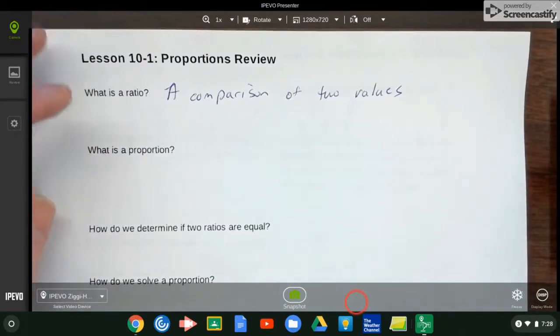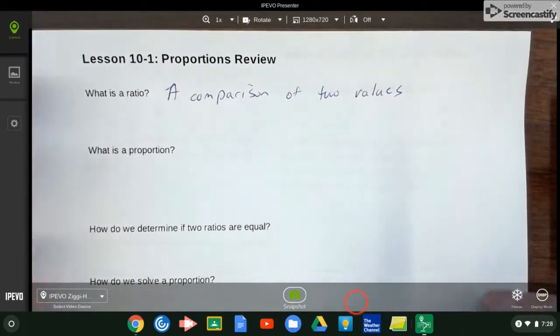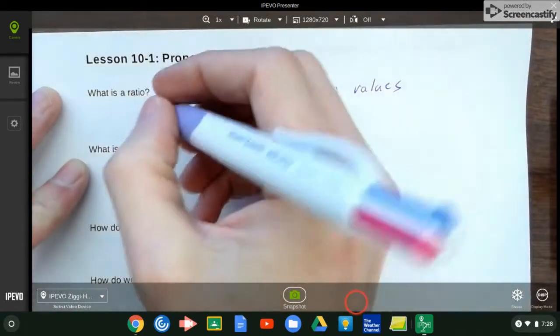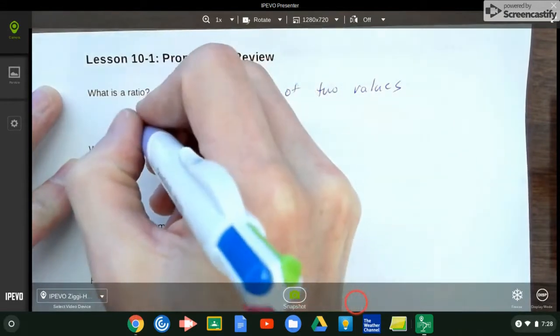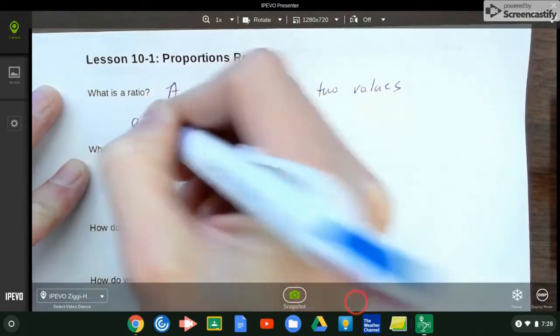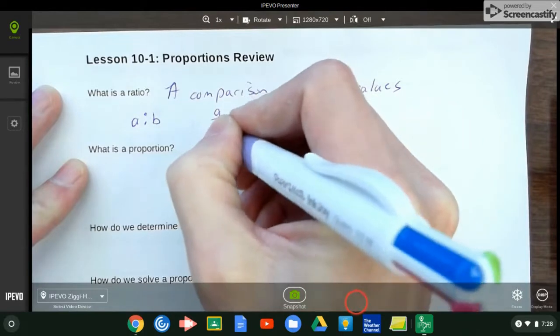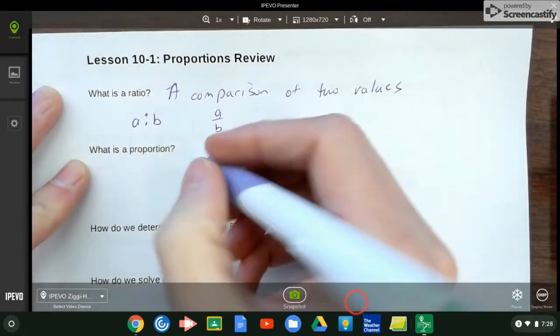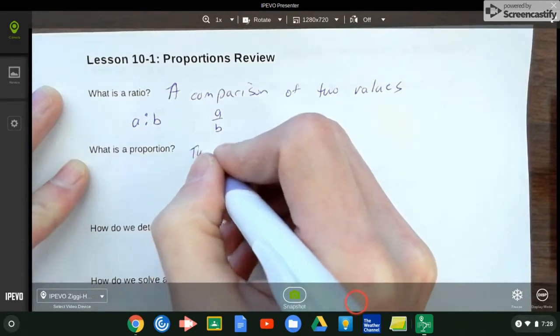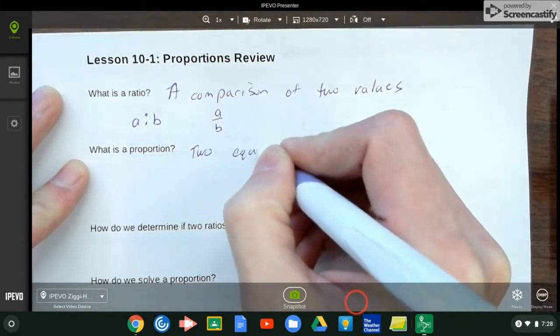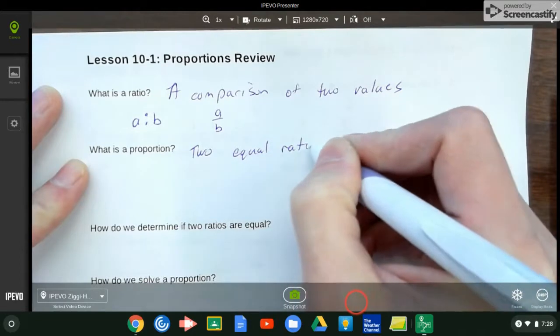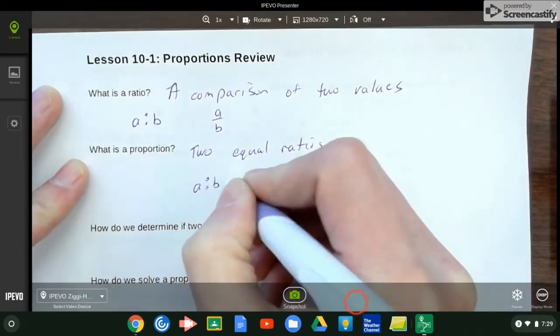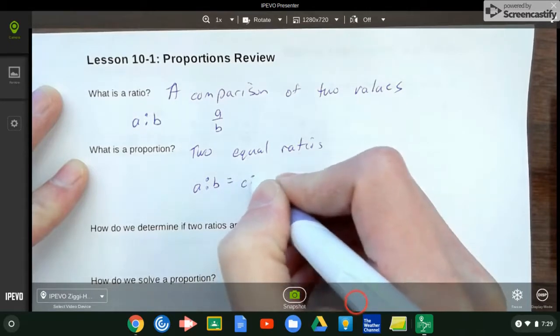A proportion is slightly different. Ratios we're talking about fractions - we could write as a to b or a over b, those are all ratios. A proportion is two equal ratios, so you're looking at a to b equals c to d, or a over b equals c over d.